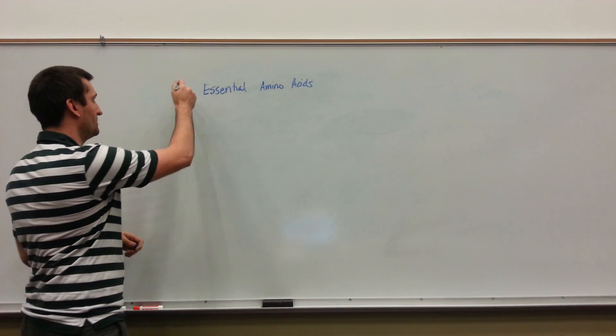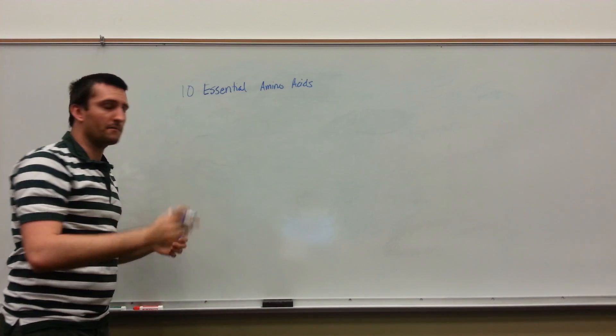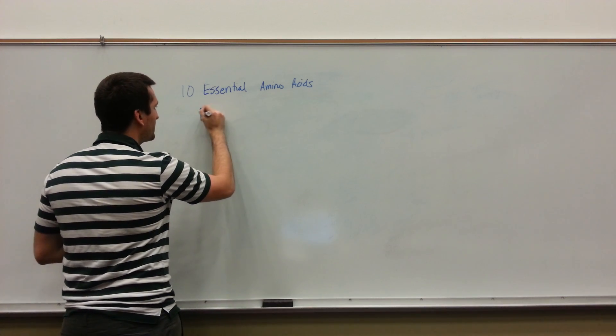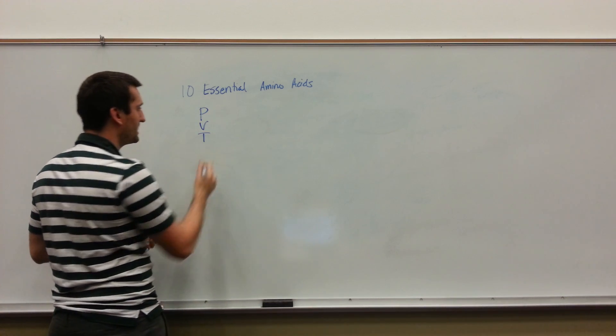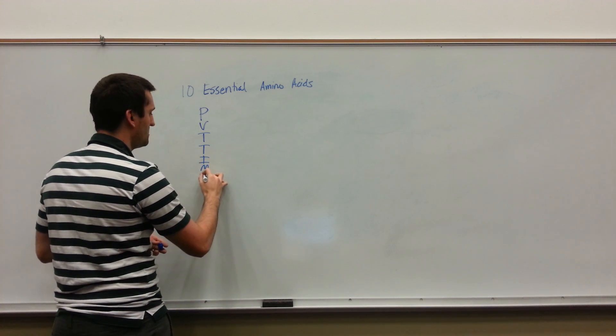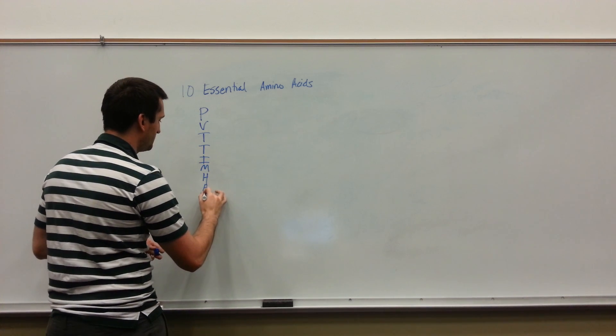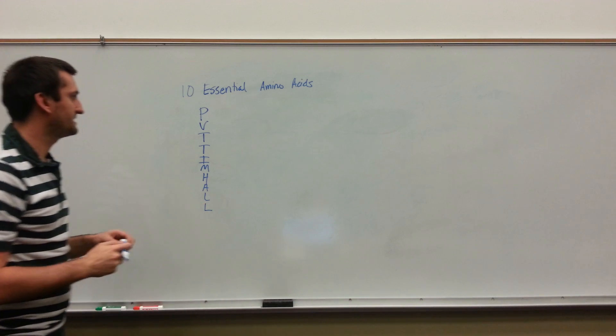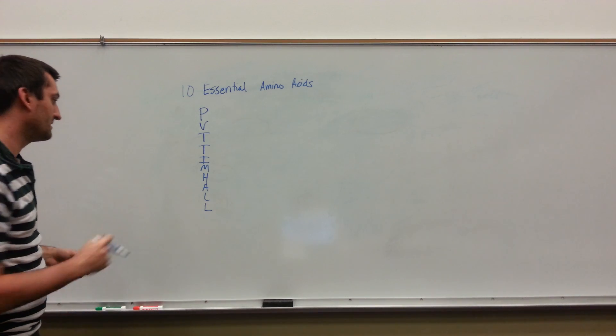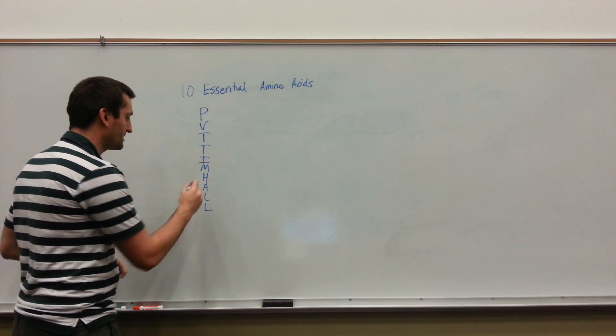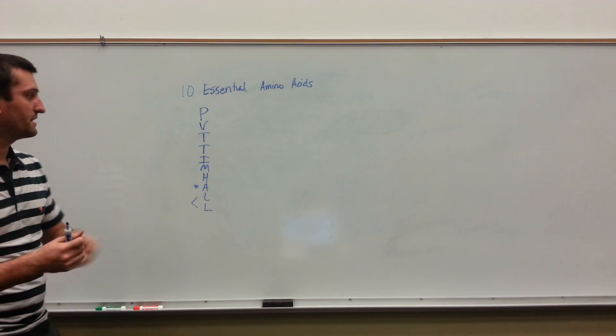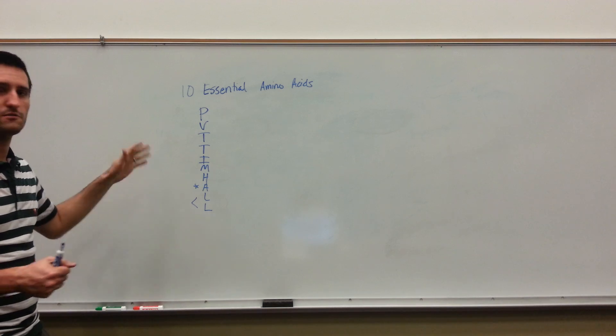There are 10 essential amino acids. There's a good way to remember this using the memory aid Private Tim Hall. Each letter indicates a different amino acid. I'm going to start this one, and these two are kind of lumped together. Let's go through each one.